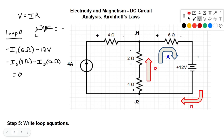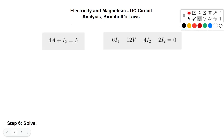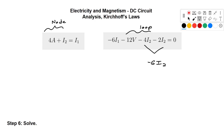Writing that out cleanly: negative 6I1 minus 12 minus 4I2 minus 2I2 equals 0. We can combine the I2 terms to get negative 6I2. So our two equations are the node law (I1 = 4 + I2) and the loop law (negative 6I1 minus 12 minus 6I2 = 0). We have two equations and two unknowns.